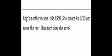Roja's monthly income is Rs. 8,950. She spends Rs. 6,750 and saves the rest. How much does she save? To find the saving amount, we need to subtract the given amounts.